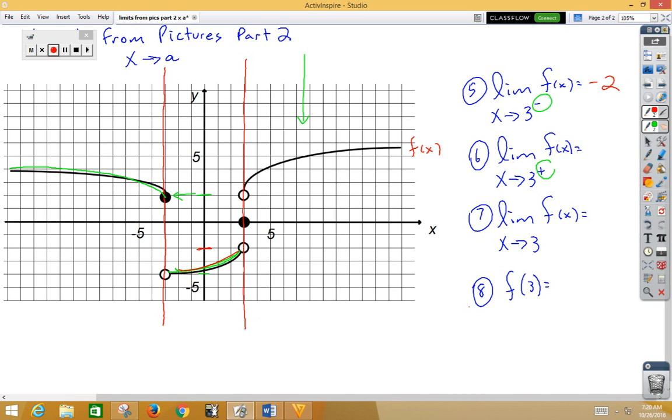3 from the right side, using that part of the graph that is to the right. So as we approach this way, our y value is positive 2.